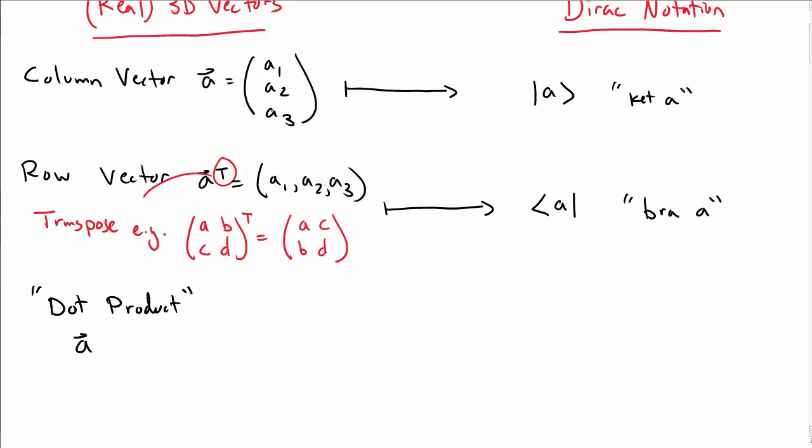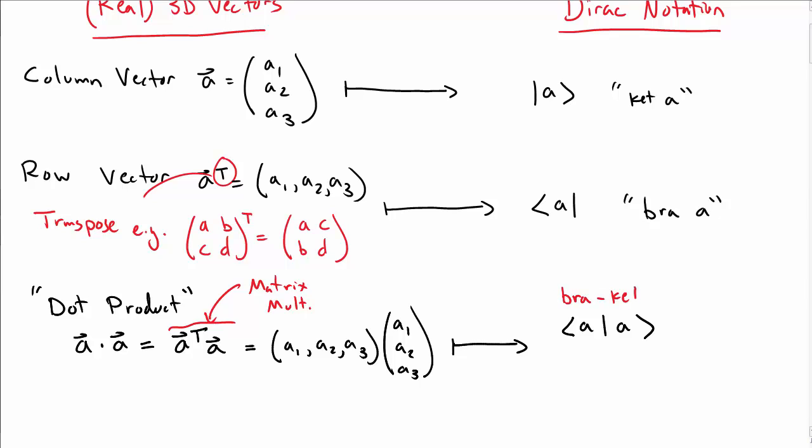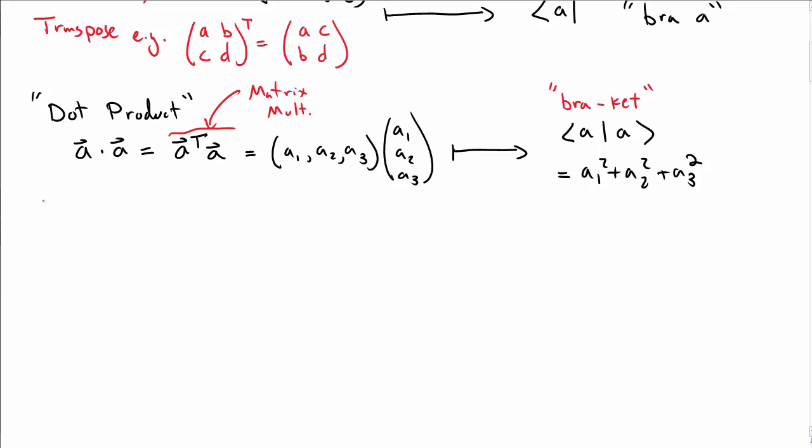Let's talk about dot products. So with vectors we know what we mean by a dot product. We take a dot a, in this language I'd say that's a transpose a, and then this dot product would be done through matrix multiplication. And the result is what you would normally get, so if I write my row vector and my column vector, then I'll get a1 squared plus a2 squared plus a3 squared. In Dirac notation I'm going to write this as bra a, ket a, or I could say that's bra ket, or bracket, and so that's the origin of the names.